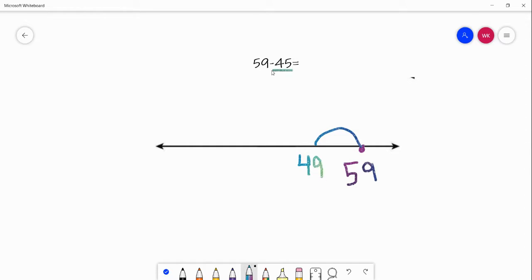Now I know that I can't jump back 10 because that's going to give me 39, and that's lower than 45. So now I have to start jumping by 1s. So I'm at 49, 48, 47, 46, 45. So now let's go ahead and count our jumps.